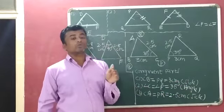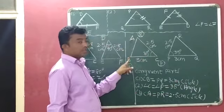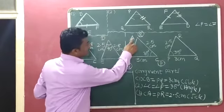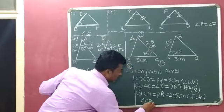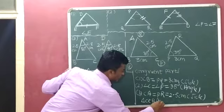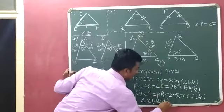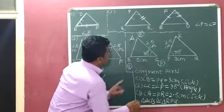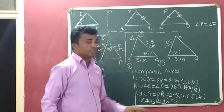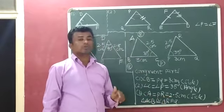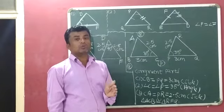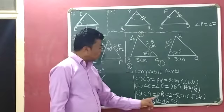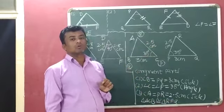According to the SAS congruence criterion — Side, Angle, Side — triangle ACB is congruent to triangle RPQ. The result in symbolic form is: triangle ACB ≅ triangle RPQ. This is because two sides and the included angle of triangle ACB are equal to two sides and the included angle of triangle RPQ, so both triangles are congruent to each other.